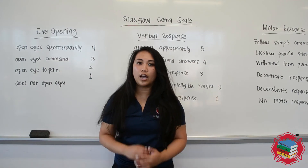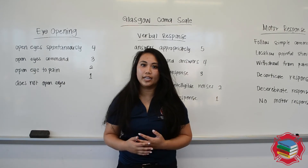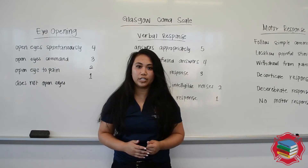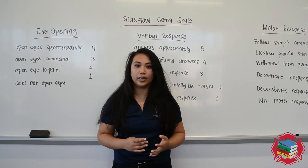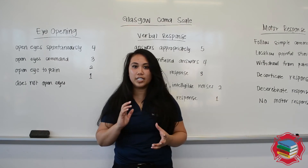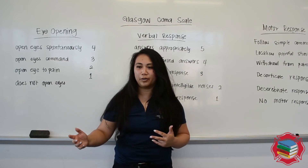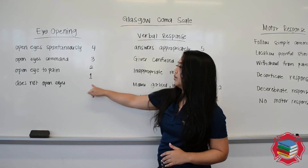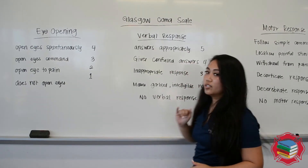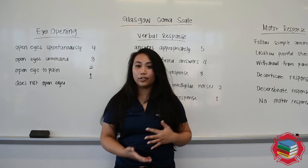The highest score your patient can get is 15, and the lowest score your patient can get is a 3. You and I are going to be 15, a chair is going to be a 3. The lowest possible is a 1 in each category — 1, 1, and 1 — so add those up and it equals 3.